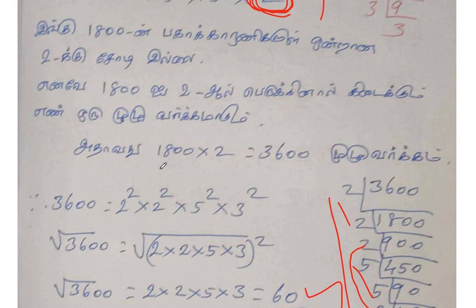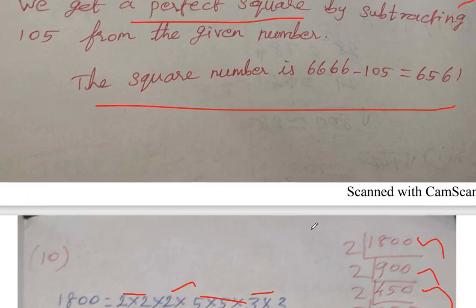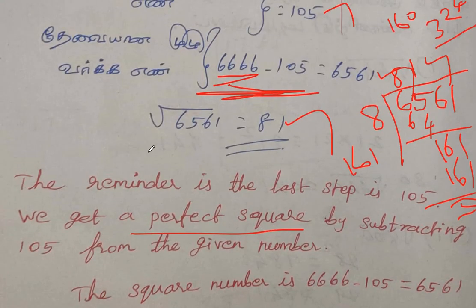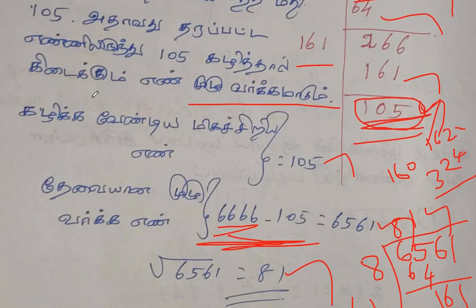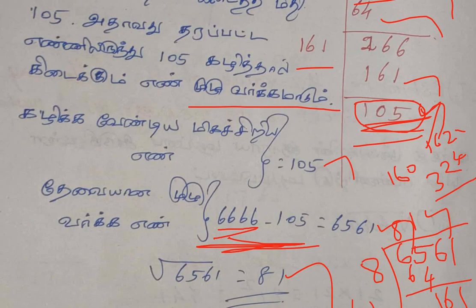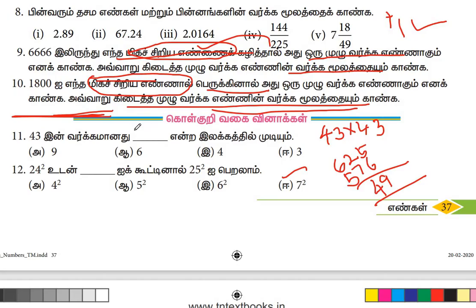If you take multiplication, then we use the factorization method. If you take subtraction, then we use the long division method. Where do we subtract? We take the sum and subtract. Where do we multiply? We use the factorization method.